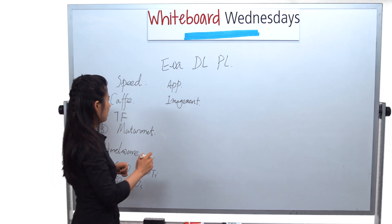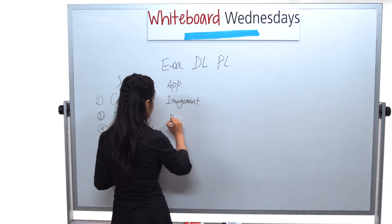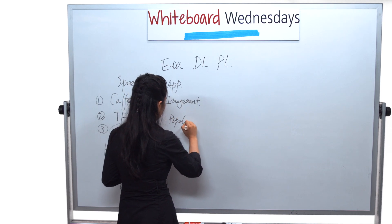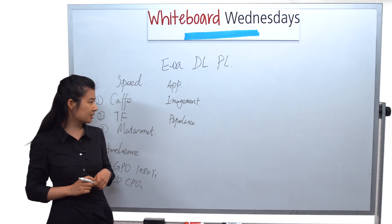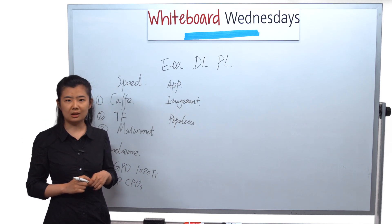Next, we are going to introduce our pipeline. As we know, in deep learning algorithms, there are mainly two processes.